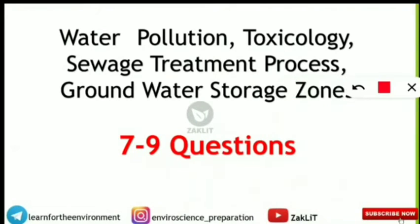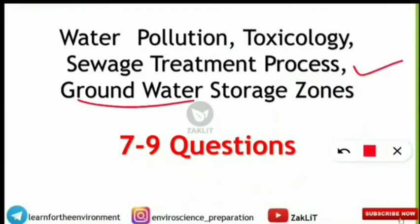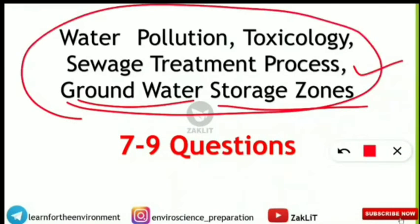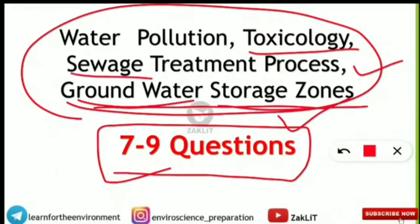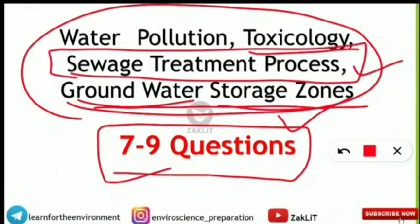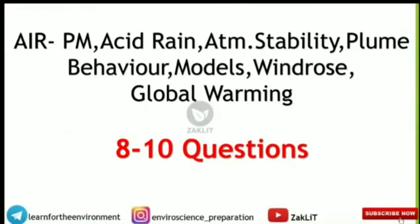Next comes a major part: water pollution, toxicology, sewage treatment process, and groundwater storage zones. Seven to nine questions are asked from these sections. Toxicology mostly involves numericals. Groundwater storage zones cover concepts like aquitard and aquiclude. Sewage treatment includes primary, secondary, tertiary stages, and aerobic and anaerobic processes — all very important, making up around seven to nine questions in the paper.